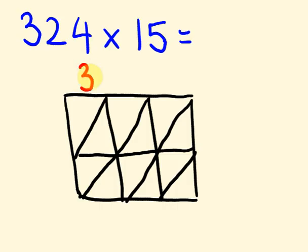So 324 times 15. And how I'm going to do this is I'm going to go 3 times 1, 2 times 1, 4 times 1, 3 times 5, 2 times 5, and 4 times 5. And I'm going to write the answers to each of these questions. So the tens go in this part and the units go in this part.